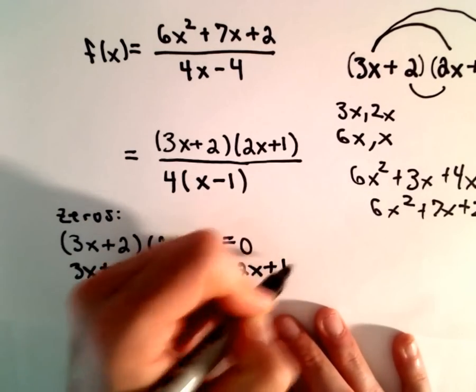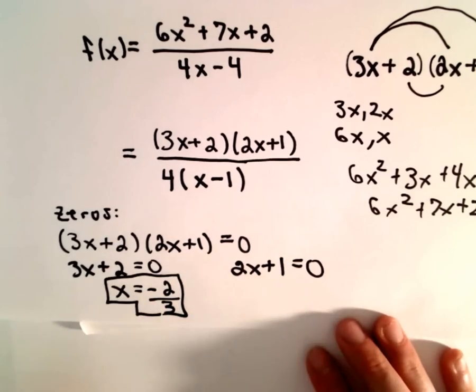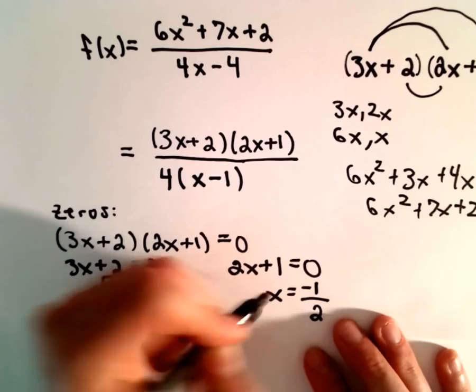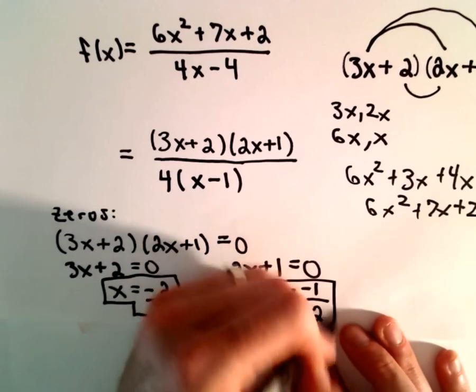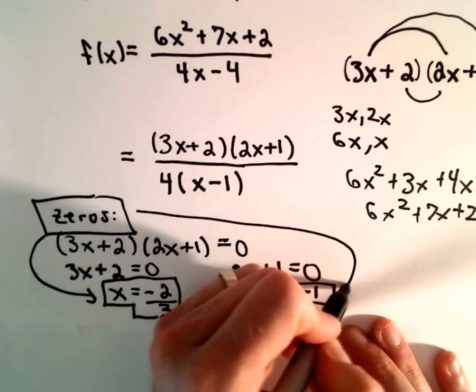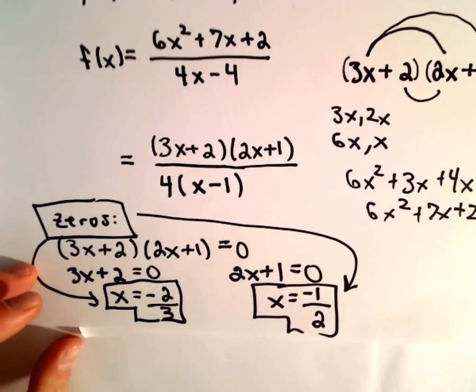Likewise, we have 2x + 1 = 0. If we subtract 1 and then divide by 2, we'll get x = -1/2. Those will be our zeros: x = -2/3 and x = -1/2.